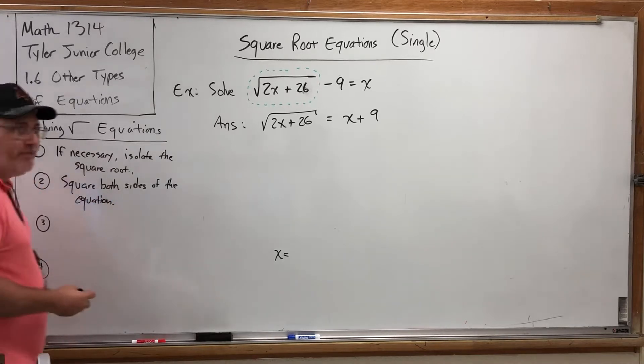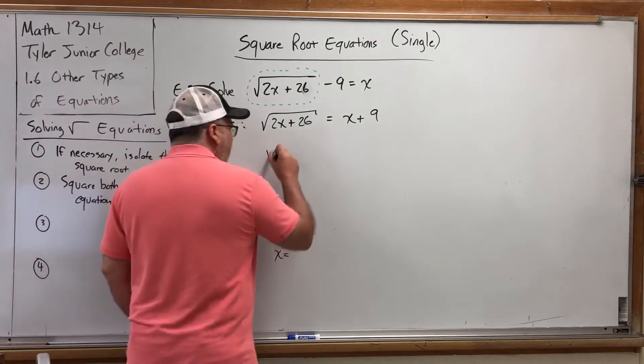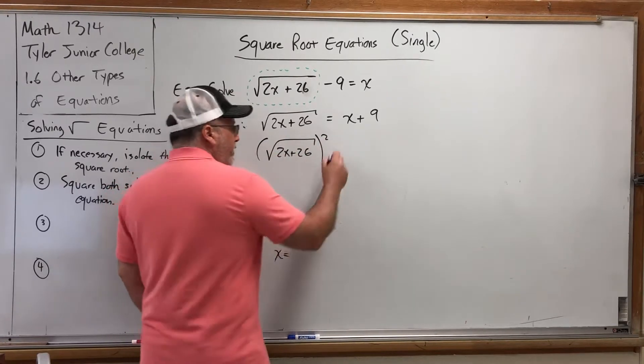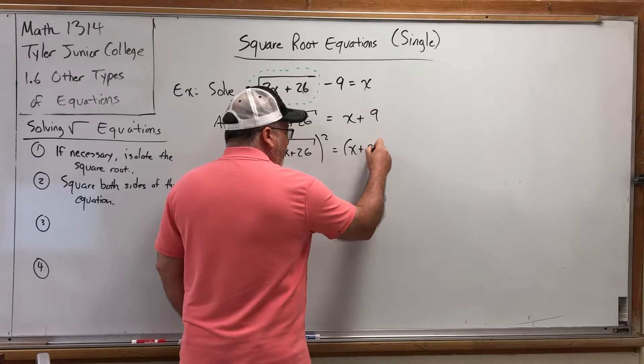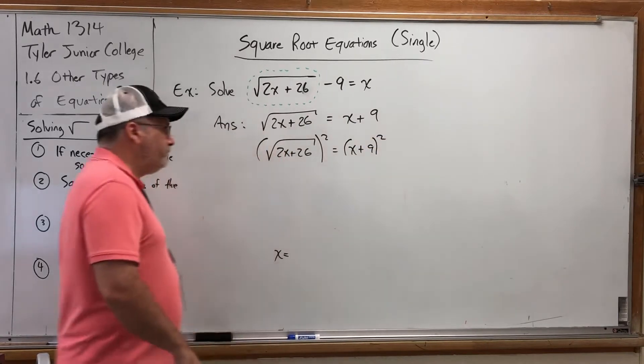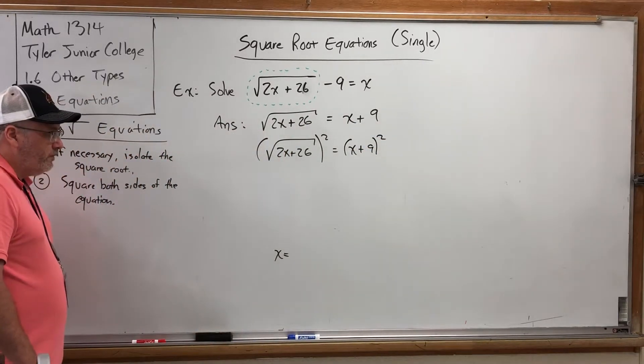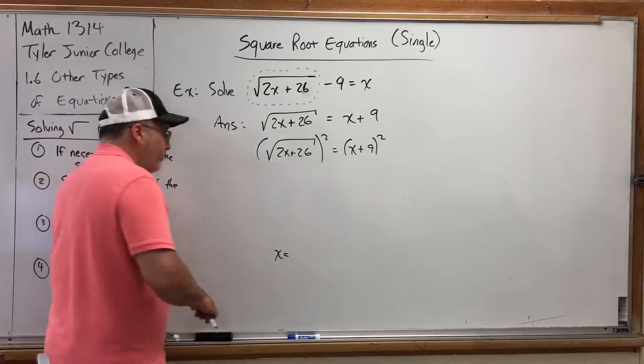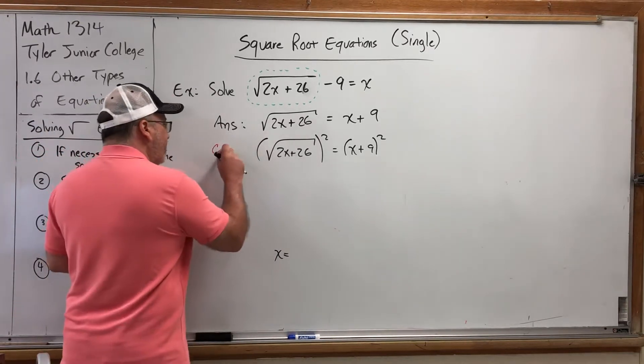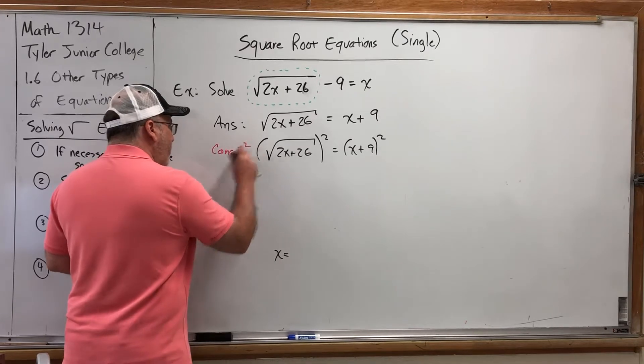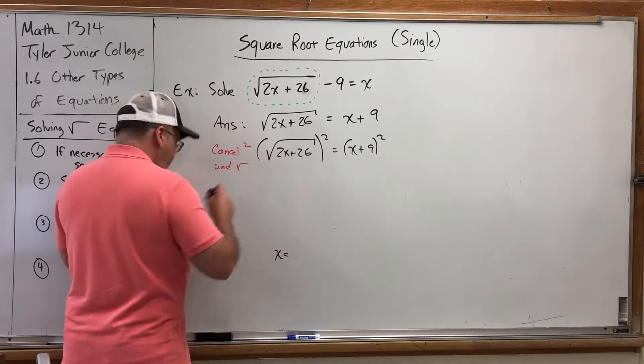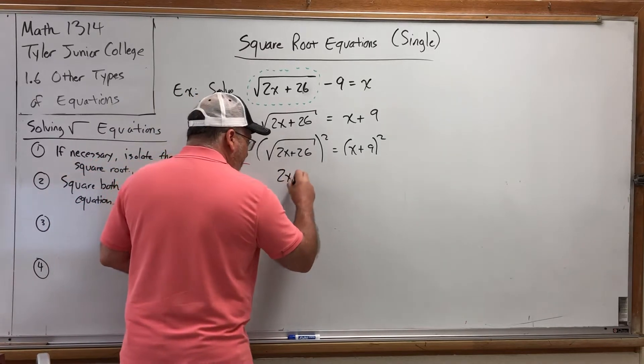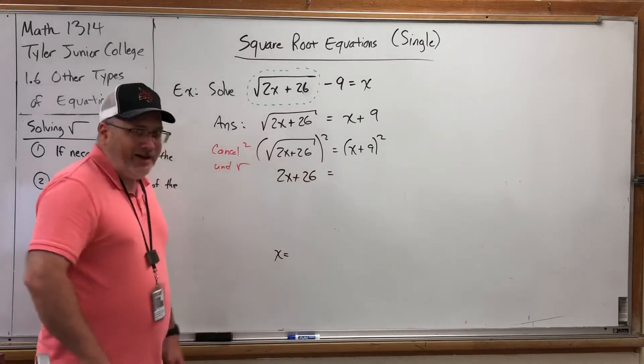So let's see what happens when we do that. Square root of 2x plus 26 in parentheses squared is equal to x plus 9 in parentheses squared. Ideally, the square and the square root should cancel. So let's do that. Cancel the square and the square root. That leaves 2x plus 26. But what about the right side?